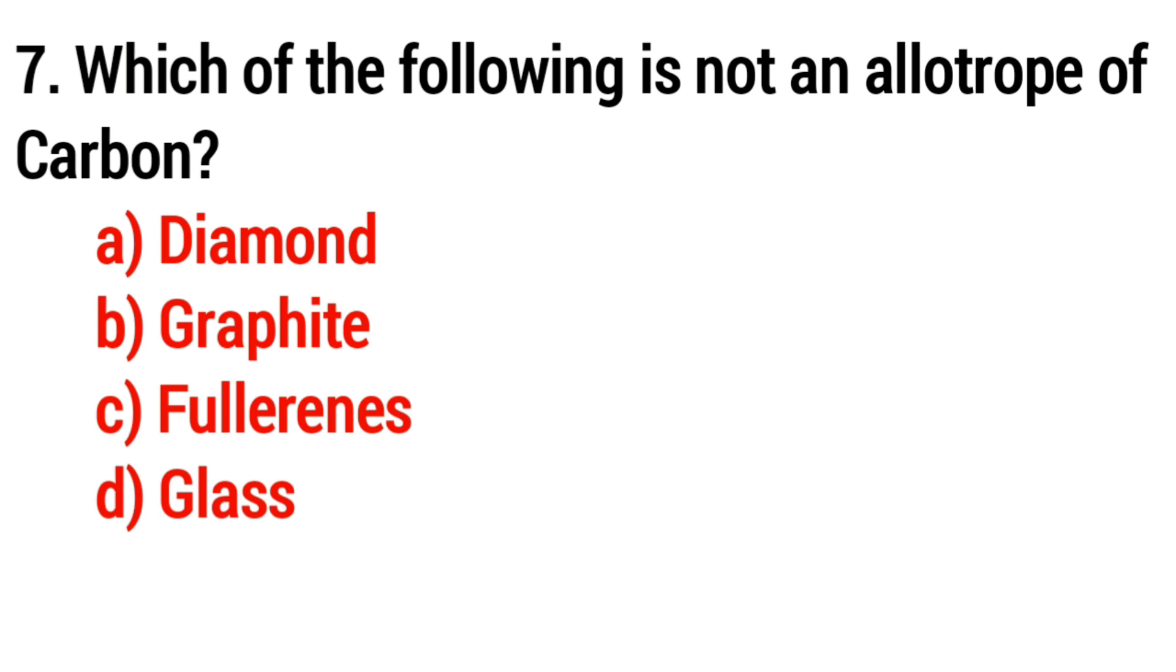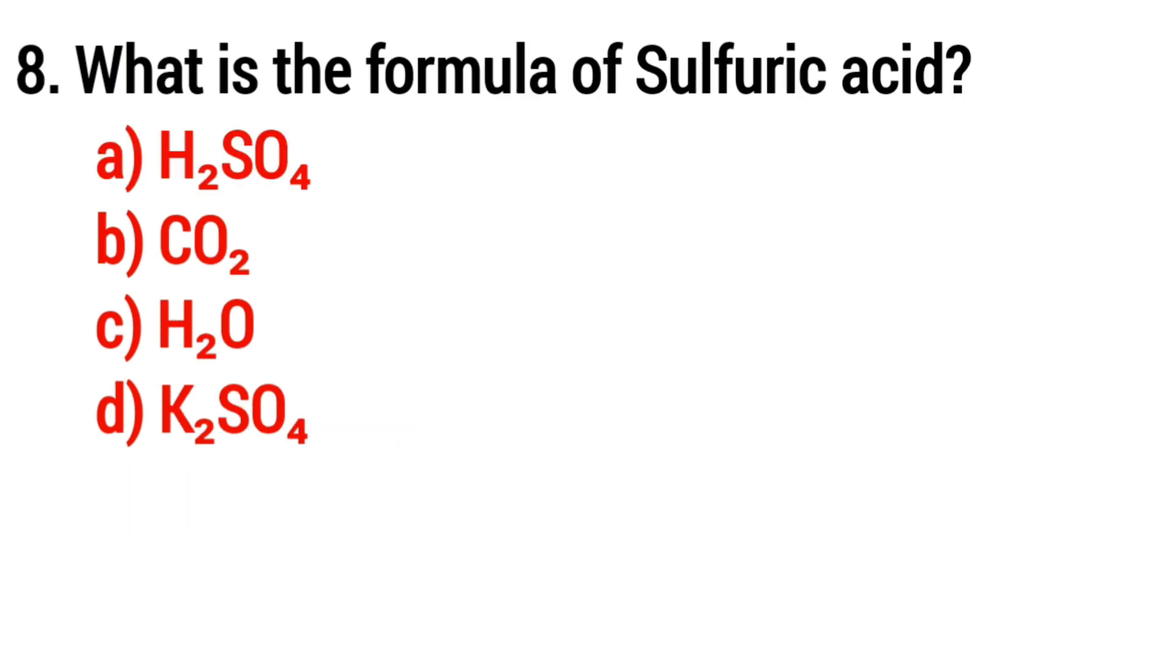Question number seven: Which of the following is not an electrolyte of carbon? The answer is option D, glass. Question number eight: What is the formula of sulfuric acid?